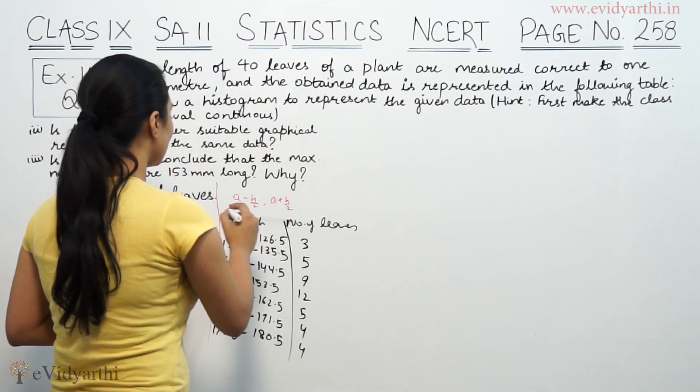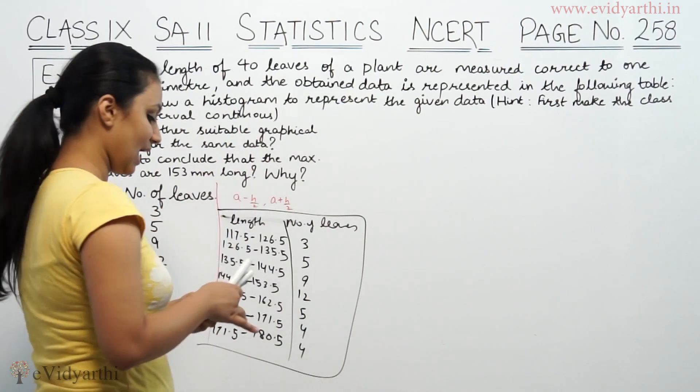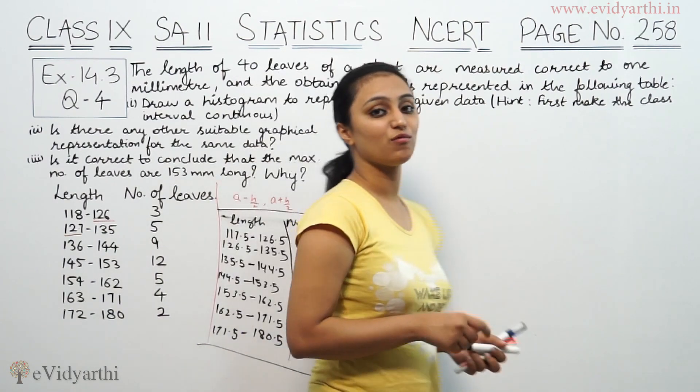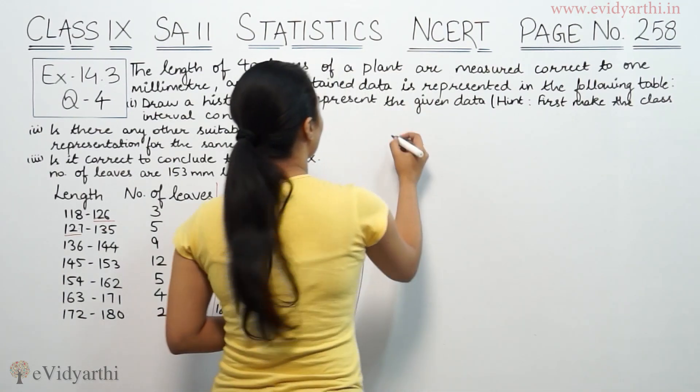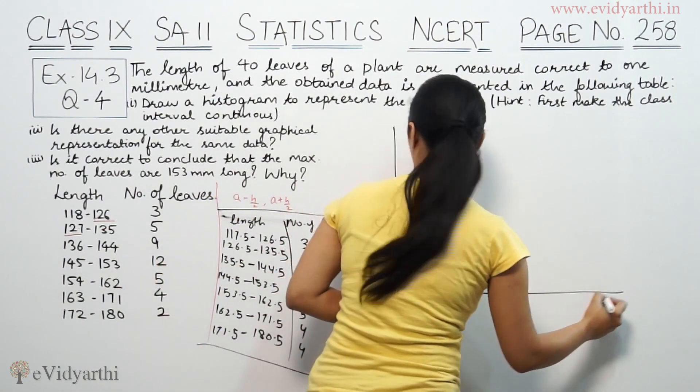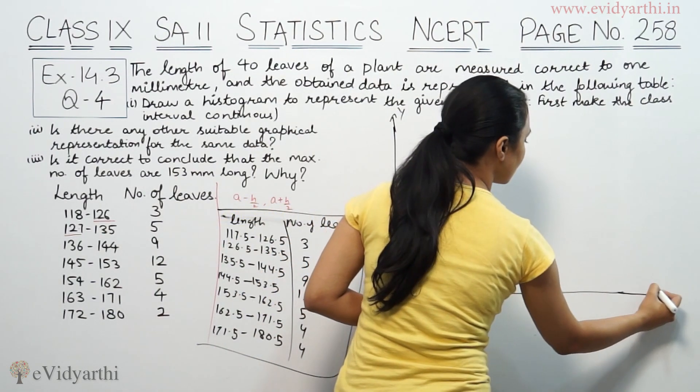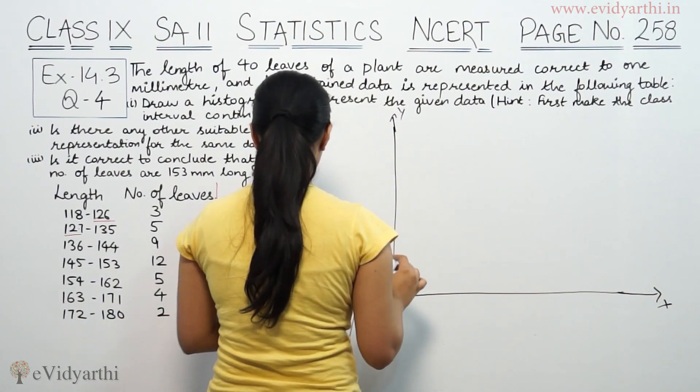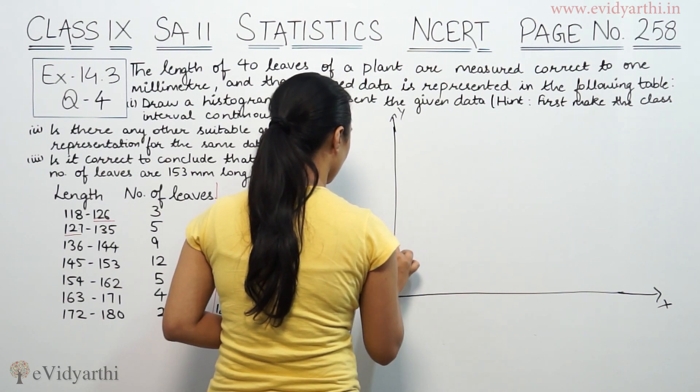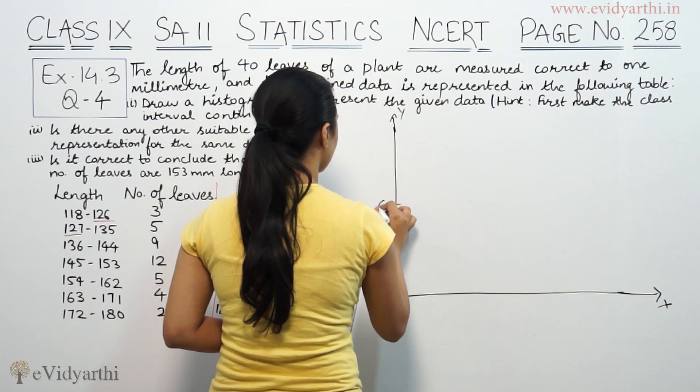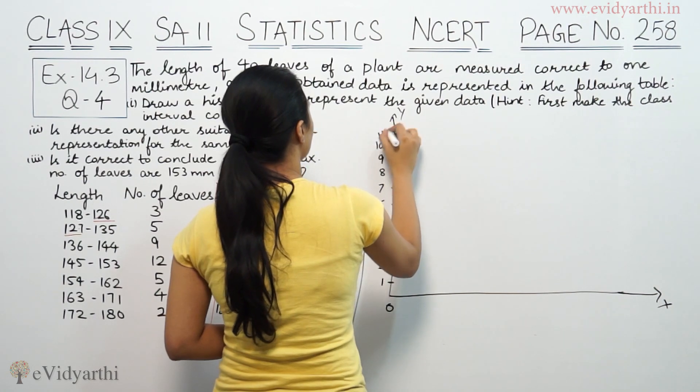Now we need to represent this table. We are making a histogram. When you make these bars, it's called a histogram. This is the y-axis and this is the x-axis. This is zero. Values 1, 2, 3, 4, 5, 6, 7, 8, 9, 10, 11, 12.